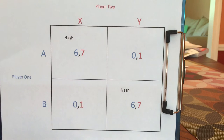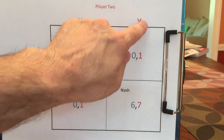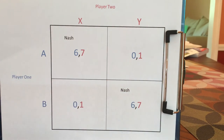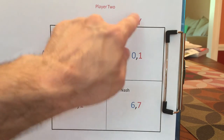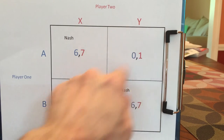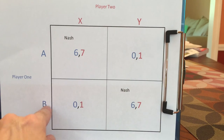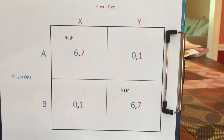BY is a Nash Equilibrium because player one will say: I'm getting six. Had I known he'd play Y, there's nothing better I could have gotten. So I don't regret playing B in response to Y. Player two will say: I don't regret playing Y given that B was played, because I get seven, but had I done something else, I would have gotten only one. So this game has two Nash Equilibria, and quite often there can be more than one.